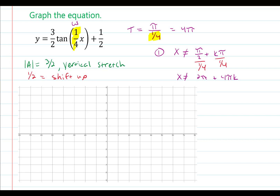From here, we will use that inequality to calculate the new vertical asymptotes. When k is equal to zero, the new vertical asymptote will be x equals two pi. When k is equal to one, x will be equal to six pi. And when k is equal to negative one, x will be equal to negative two pi. These three vertical asymptotes will allow us to plot two curves, which is two cycles or two periods of the tangent function.